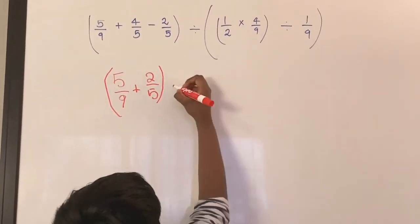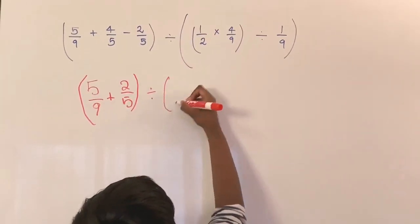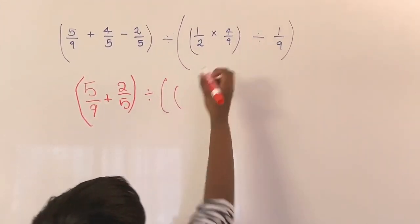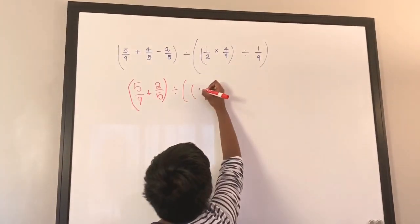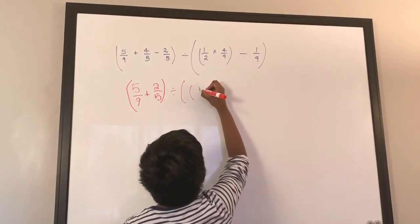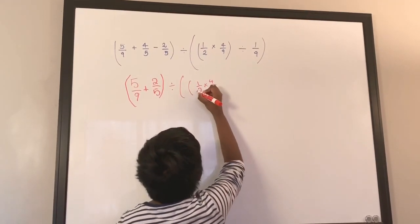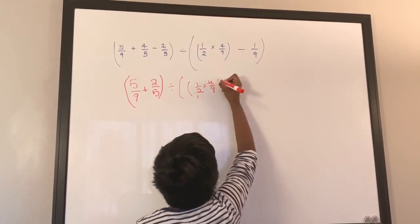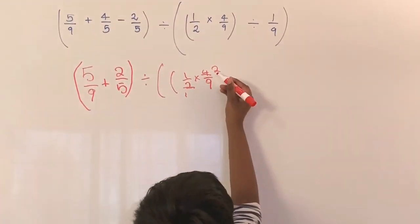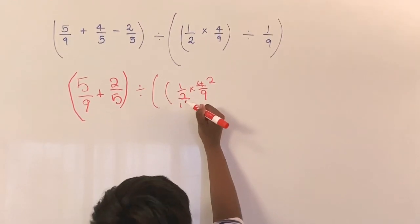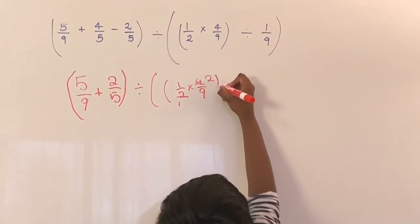Now let's solve the second bracket: 1 over 2 times 4 over 9. We can reduce: 4 divided by 2 equals 2, and 2 divided by 2 equals 1. So that gives us 2 over 9.